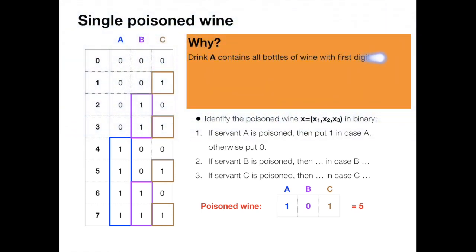So why is this true? By construction, drink A contains all the bottles which has digit one in the first column. So in other words, if x₁ is one, then A must contain x, which is equivalent to saying that servant A will be poisoned. And if x₁ is 0, then A does not contain the poisoned wine and then servant A will not get poisoned.